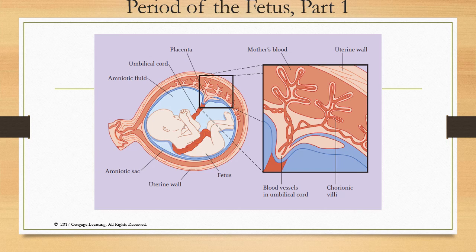Now we move to the third period of prenatal development: the period of the fetus. The fetus is now much larger and looks like a baby. It's wrapped in the amniotic sac and connected to the mother through the umbilical cord. The amniotic sac is filled with fluid — it's warm, provides nutrients, and removes waste products. You can see the placenta, which allows the mother's blood to deliver nutrients and oxygen to the child.